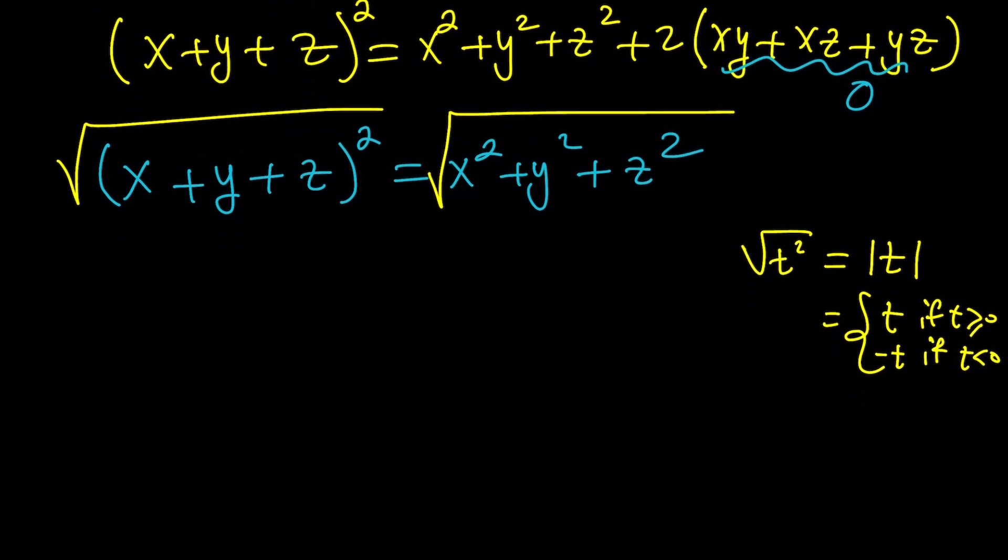This gives us two things, and we can use, instead of the absolute value, we could use plus minus sign. In other words, x plus y plus z is going to equal plus minus the square root of x squared plus y squared plus z squared.